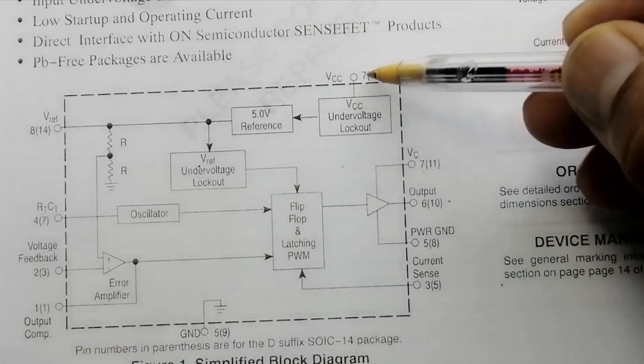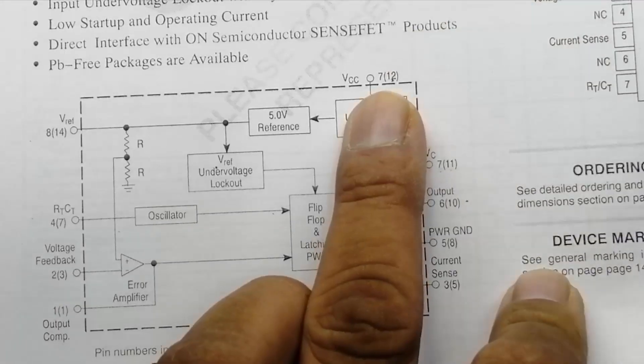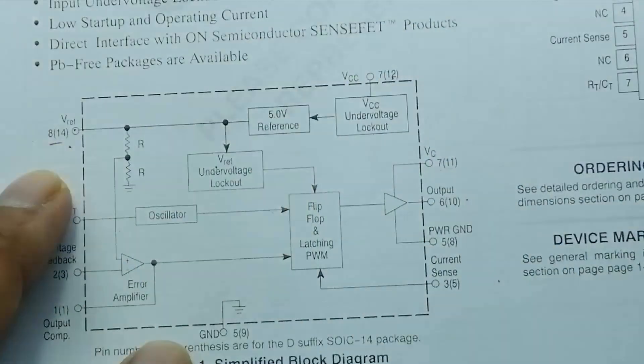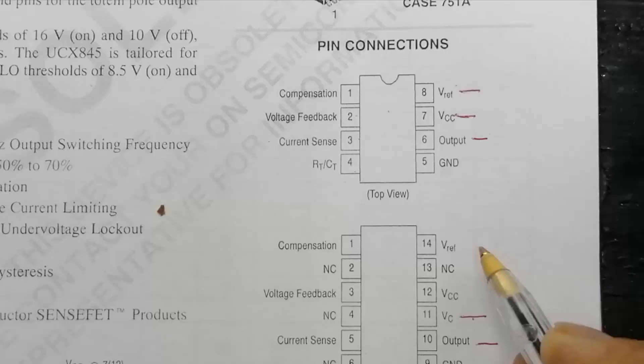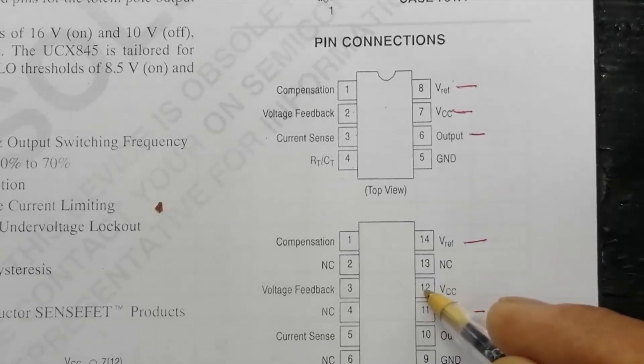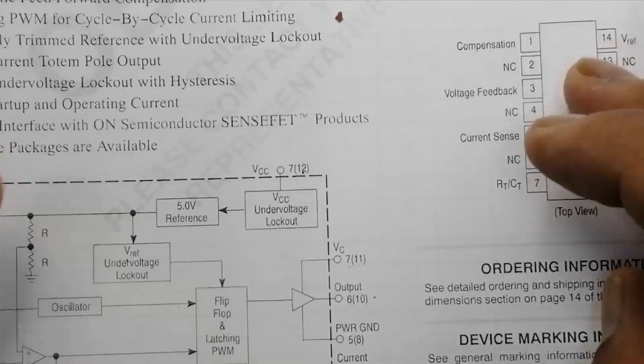Like here, VCC pin number 7, pin number 12, pin number 7 and 12 are replacement to each other. V reference pin number 8 and 14. V reference here is pin number 8 and here pin number 14. Just only VC and VCC will be connected to each other. Here VCC and VC will be connected to each other, pin number 4 and 7 are equivalent to each other.